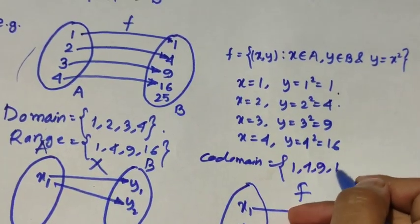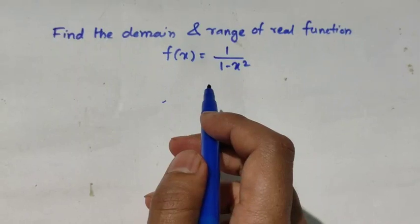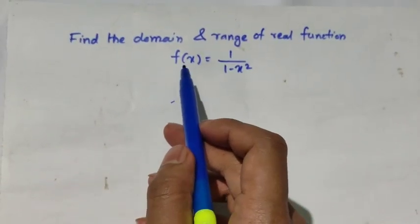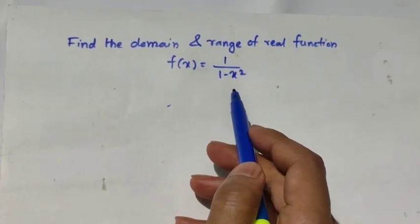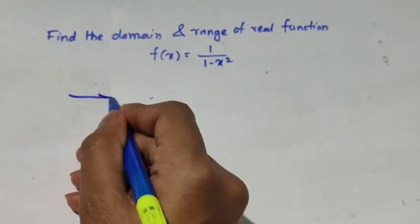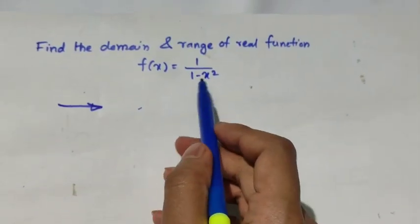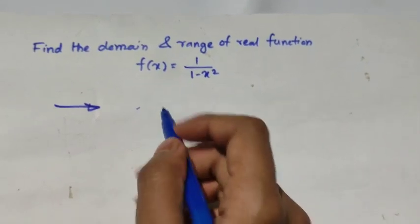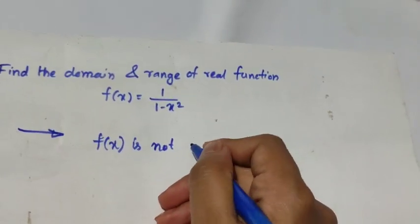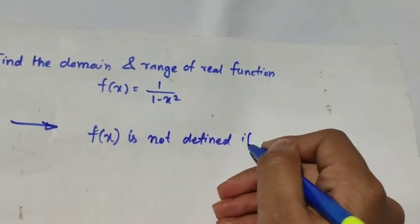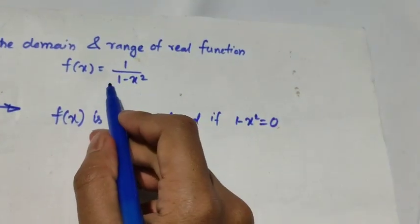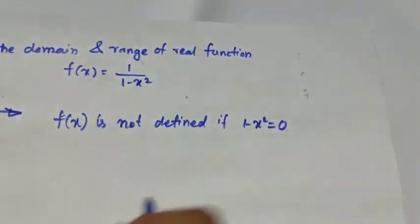Let us take an example: find the domain and range of the real function f(x) = 1 / (1 − x²). We know the domain is the set of values of x for which the function is defined. To find this, we check when f(x) is not defined — specifically when the denominator equals zero.